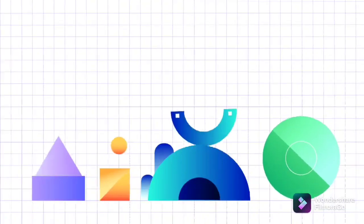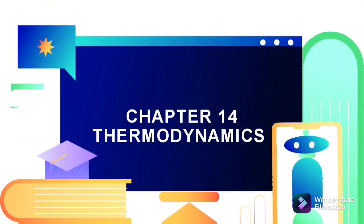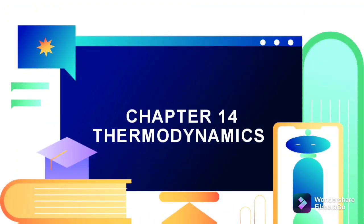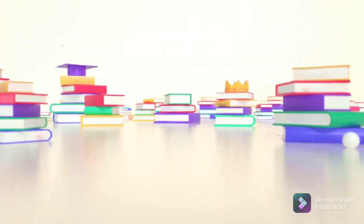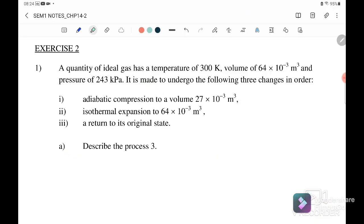Hello, welcome back to my channel. Today we are going to learn Chapter 14: Thermodynamics. In this video we are going to discuss 14.2 Thermodynamic Processes, Exercise 2. A quantity of ideal gas has a temperature of 300 Kelvin, a volume of 64×10⁻³ m³, and a pressure of 243 kPa, and is made to undergo the following three changes in order.